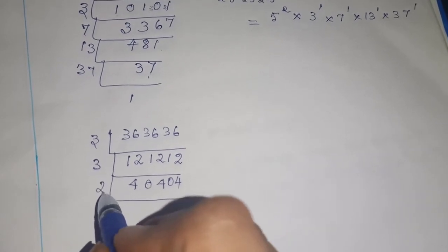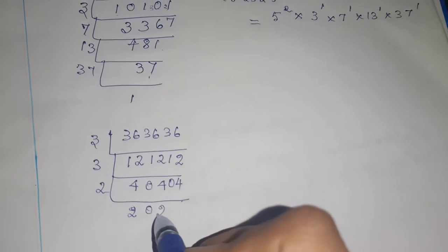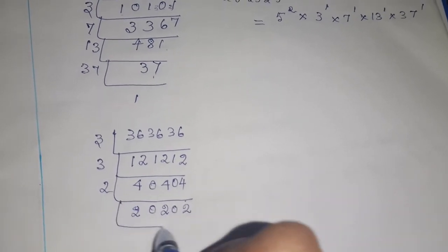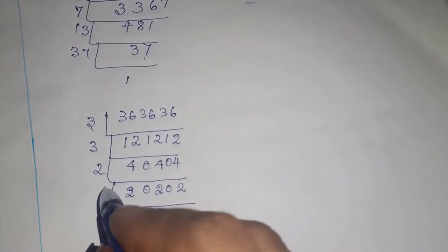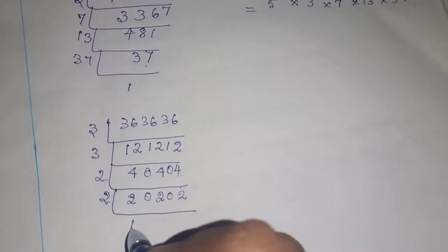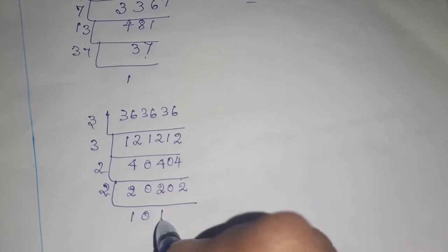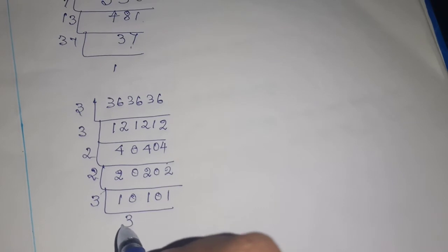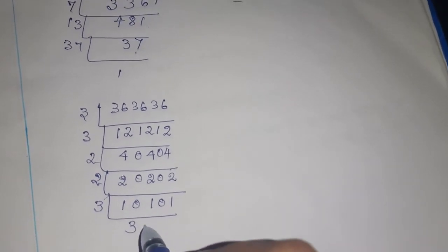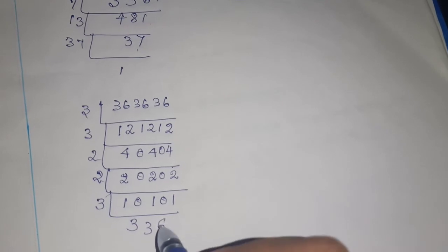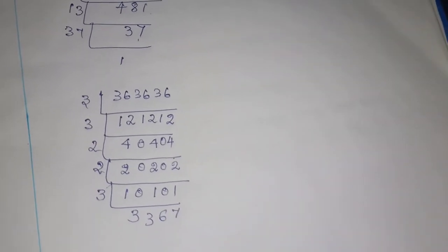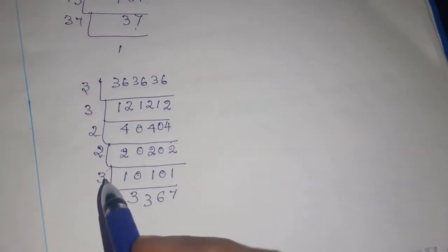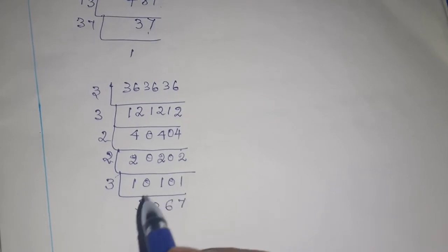Next, you can go with 2. 2 twos are 4. 0, 2 twos are 4. 0, 2 twos are 4. Next, 2 twos are 2. 0, 2 ones are 2. 0, 2 ones are 2. Next, you can add the number of digits - it is 3, so you can go with the 3 table. 3 threes are 9, remainder 1. Again, 3 threes are 9, remainder 2. 6 threes are 18, remainder 2. 7 threes are 21.